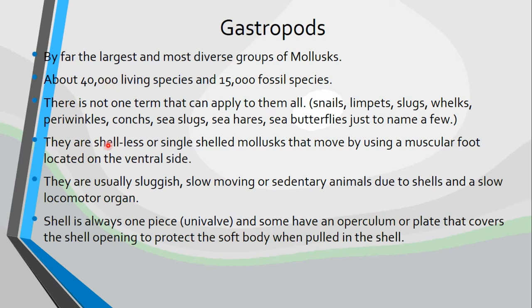So they are either shelled or shell-less. If they have a shell, they have a single shell — only one shell. And they move by a muscular foot located on the ventral side. So when you think about a snail or a slug crawling on its belly, that is its foot and it is there on its ventral side. They are usually sluggish, slow-moving, or sedentary, meaning that they are anchored in one spot and will not move. This is due to their shells and slow locomotive organ, so they are just not very fast. Because of the way that they move by using that foot, that will limit their ability to move quickly.